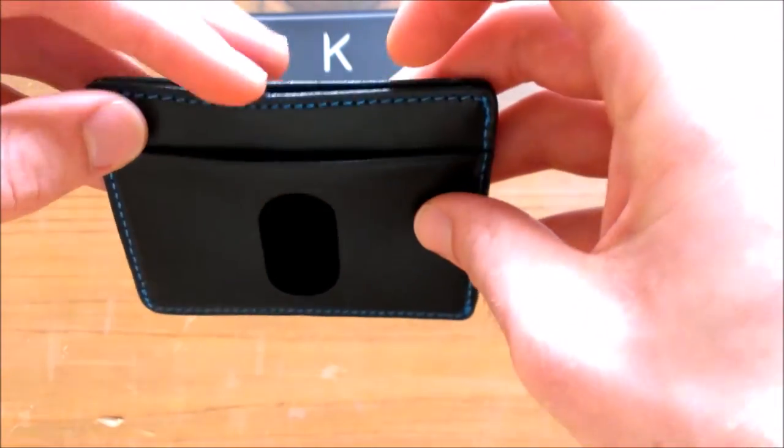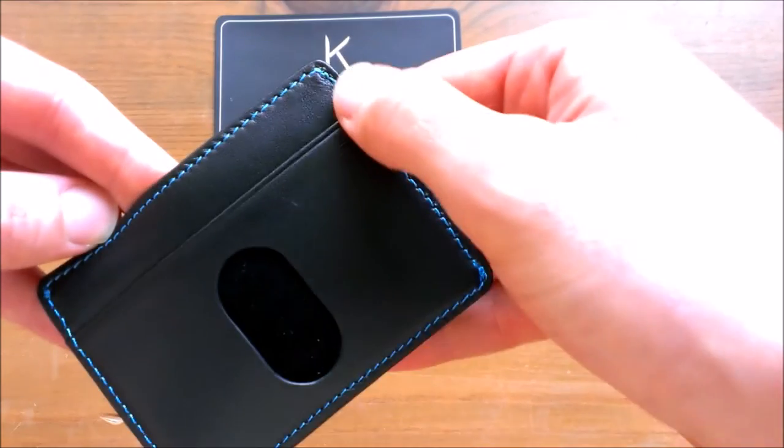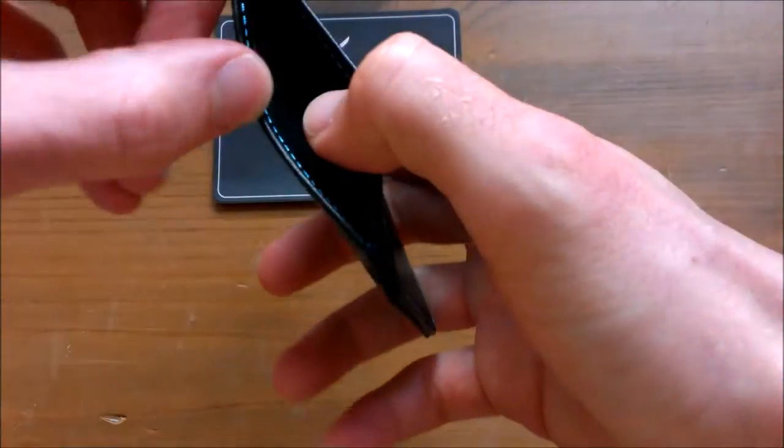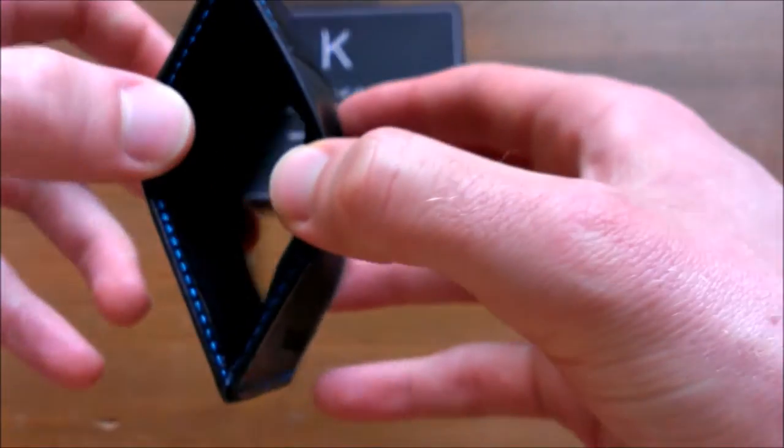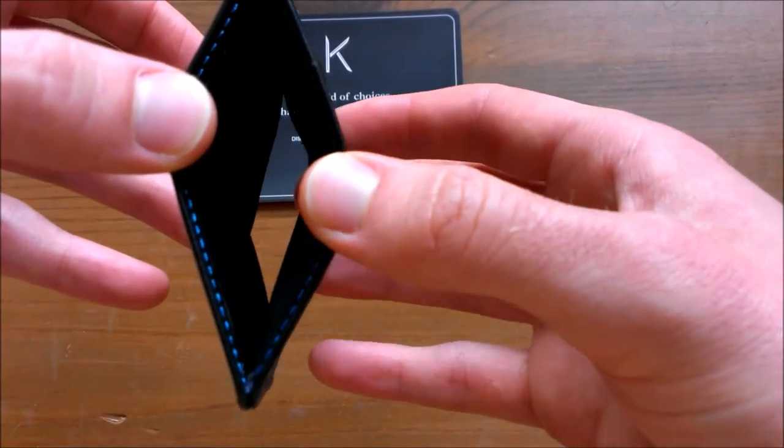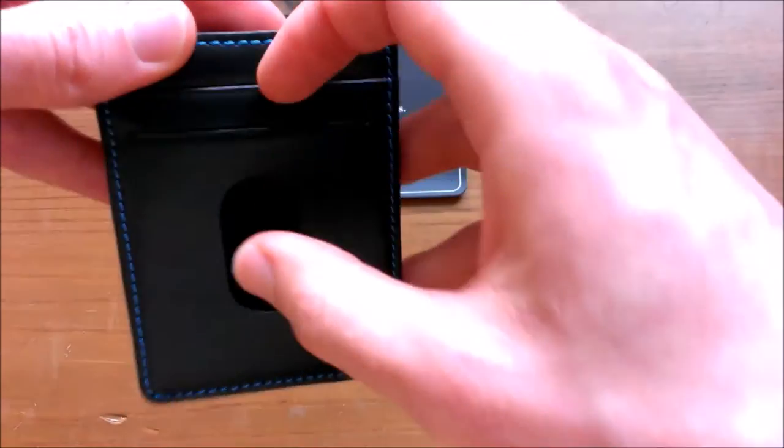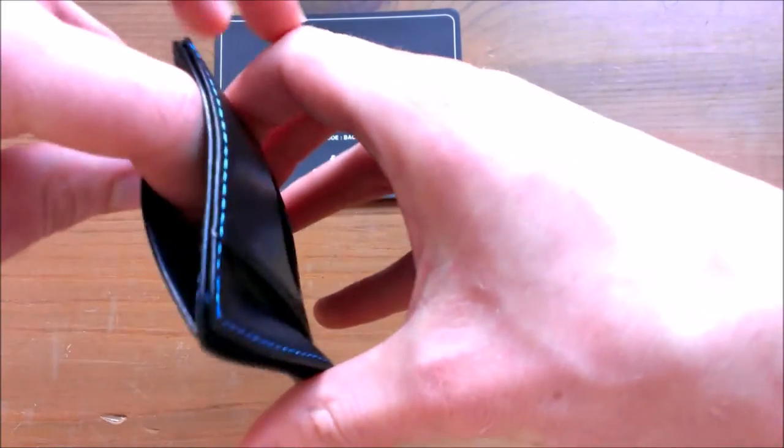It just has a few pockets, so it's got an easy access pocket there on this side with a thumb drawer slot. It's got a middle pocket that goes all the way through the wallet which is used for cash, and I'll show that later, and then two pockets on the back. One is a vertical quick draw with the thumb slot and one just a normal vertical pocket.